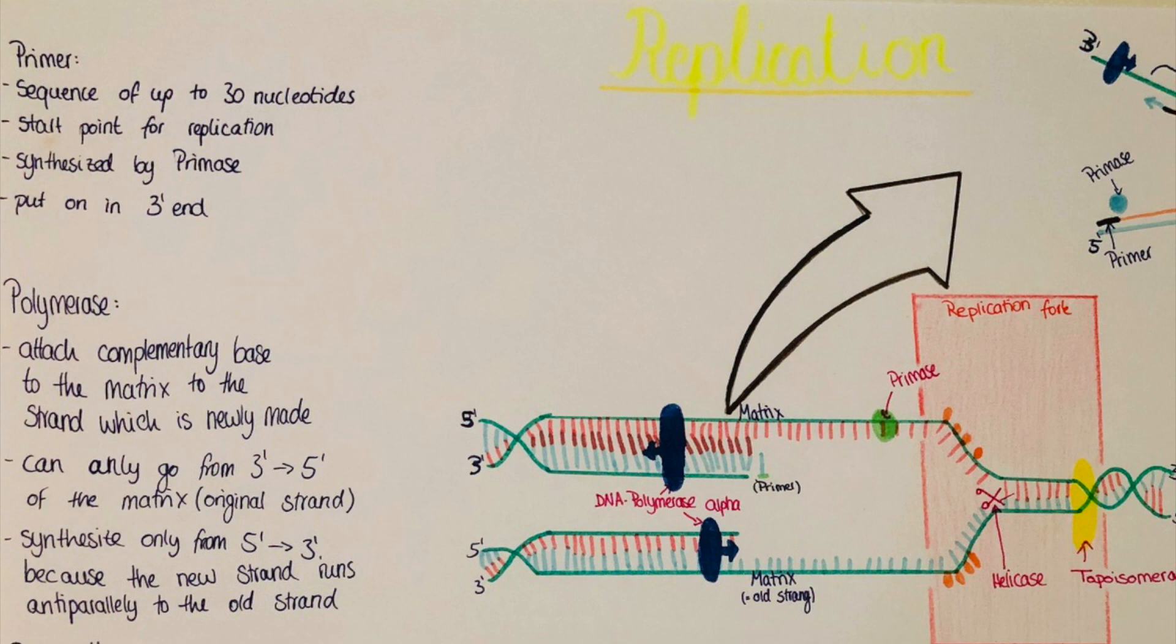But in the other strand the DNA runs anti-parallel to that, so then the primase has to set a primer whenever there's a new part of DNA opened. You can imagine it like a zipper, just that one enzyme sits there where the zipper opens and the other one goes in the direction where the zipper is still closed.